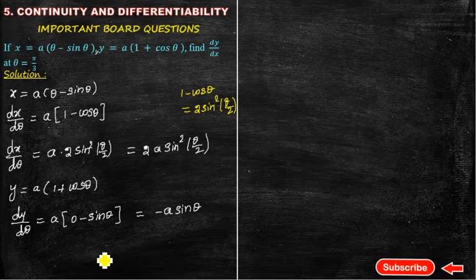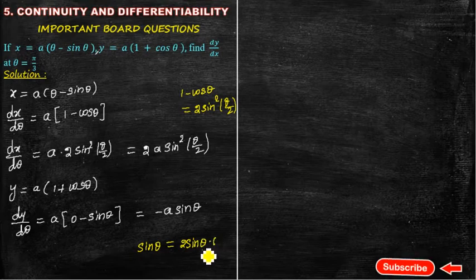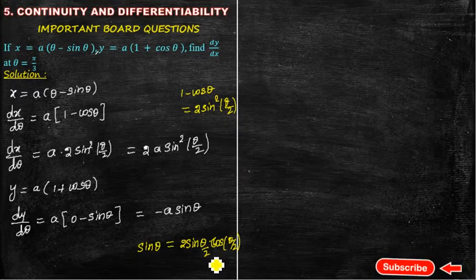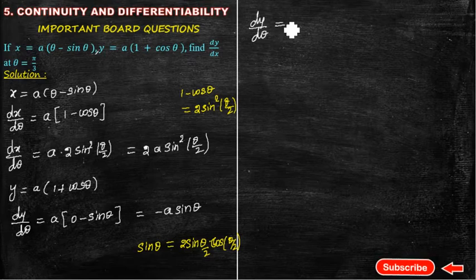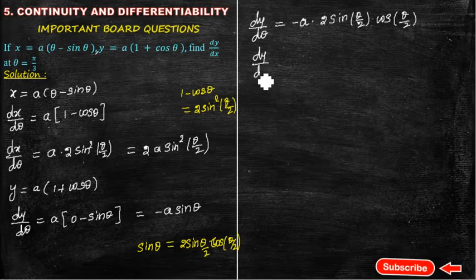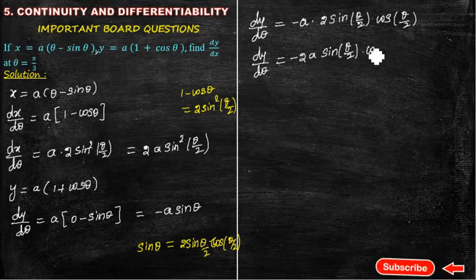We know the formula: sinθ = 2sin(θ/2)·cos(θ/2). Using this formula, dy/dθ = -a × 2sin(θ/2)·cos(θ/2). So dy/dθ = -2a·sin(θ/2)·cos(θ/2).